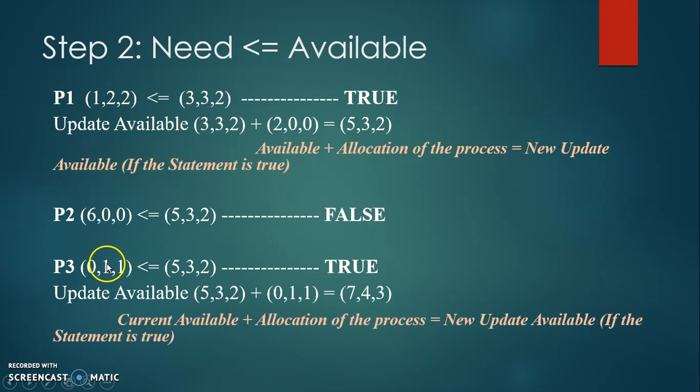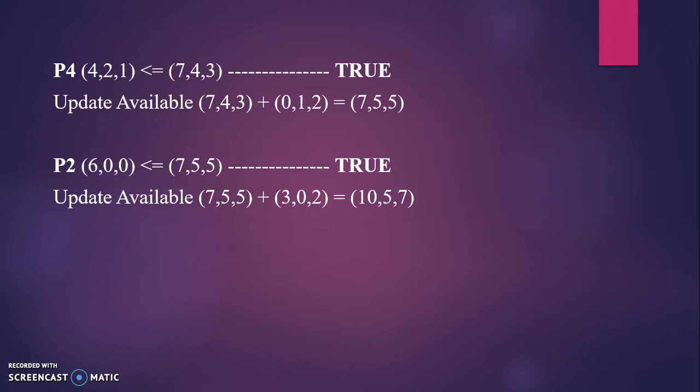In process 3, write again the need for process 3, which is (0, 1, 1). Is it less than or equal to (5, 3, 2)? If this statement is true, then add to get the new availability. Then proceed to P4.